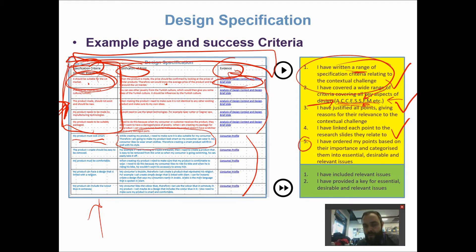The final thing I like students to do is some prioritization — deciding what is most important and what is less important. Later in the project, the specification is used first when designing to make sure you're doing exactly what you aimed for in your design brief. As you progress through an iterative design process, you'll constantly evaluate and modify your designs against each criteria. I like students to order points from most important at the top to least important at the bottom.